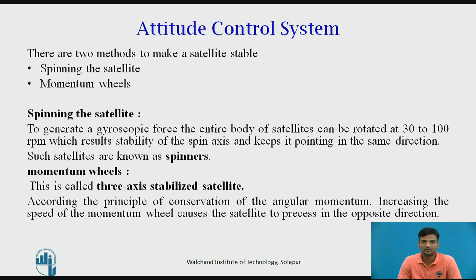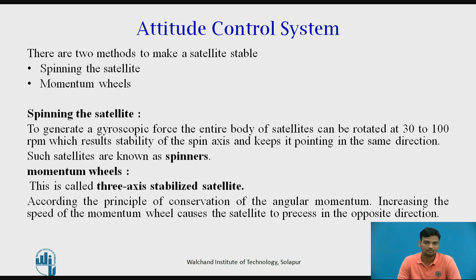There are two ways to make a satellite stable when it is in orbit and weightless: spinning the satellite and using momentum wheels. The entire body of the satellite can be rotated at 30 to 100 rpm to create gyroscopic force, which provides stability of the spin axis and keeps it pointing in the same direction. Such satellites are known as spinners. The best example of a spinner satellite is the Hughes 376, also called Boeing 376.